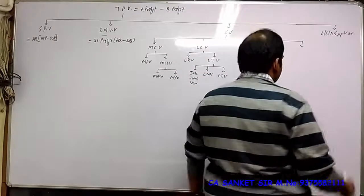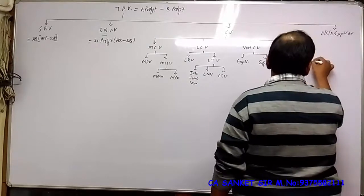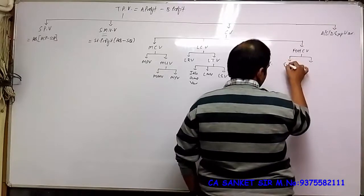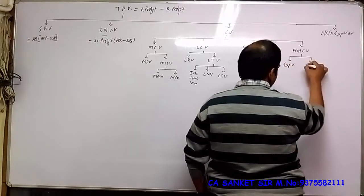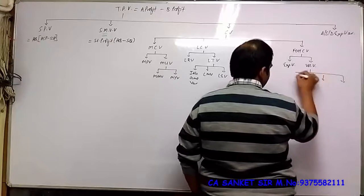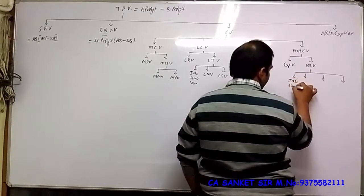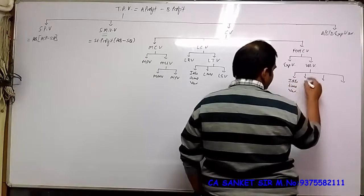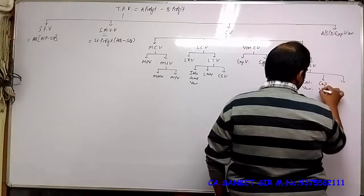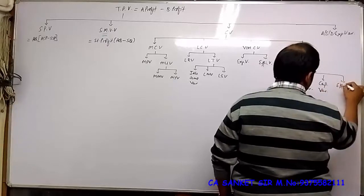Then we studied Fixed Overhead Cost Variance, which has two parts: Expenditure Variance and Volume Variance. Volume Variance has 4 parts: Idle Time Variance, Calendar Variance, Capacity Variance, and Efficiency Variance.